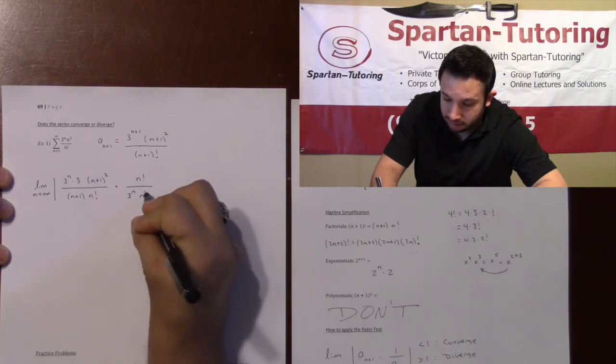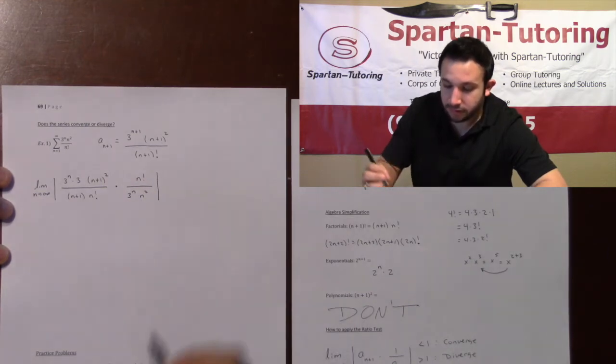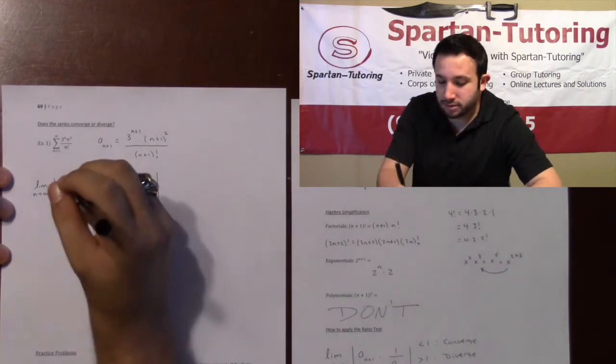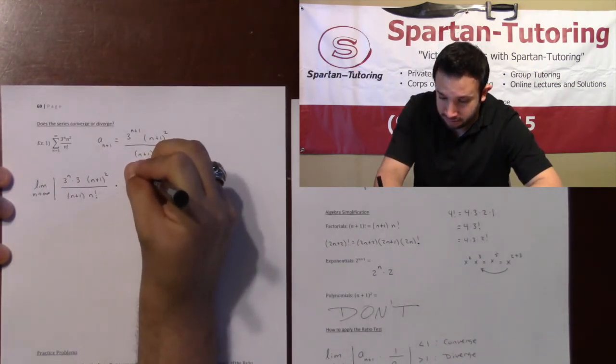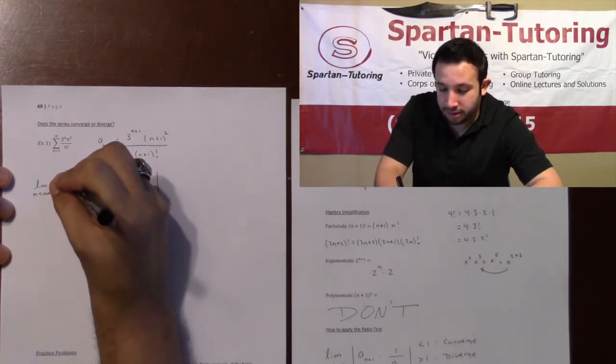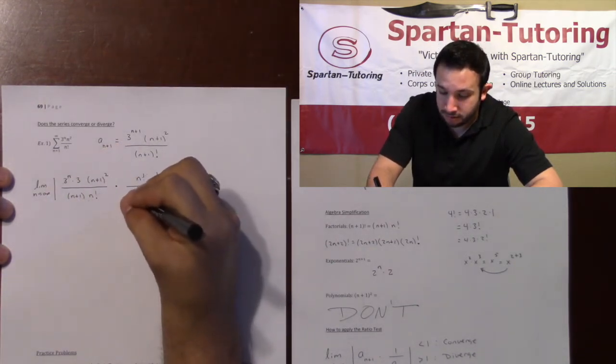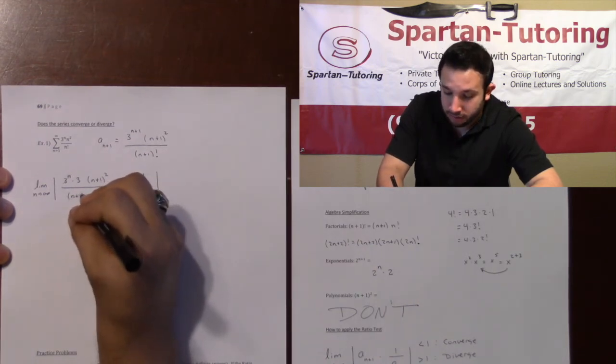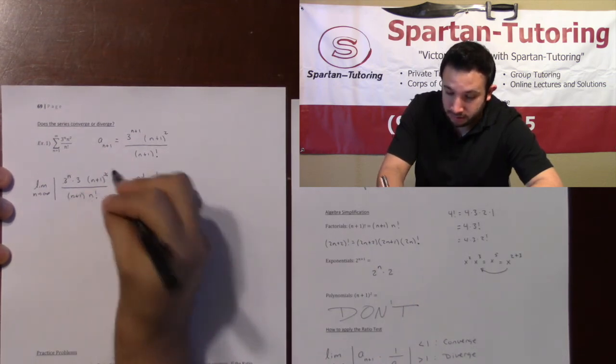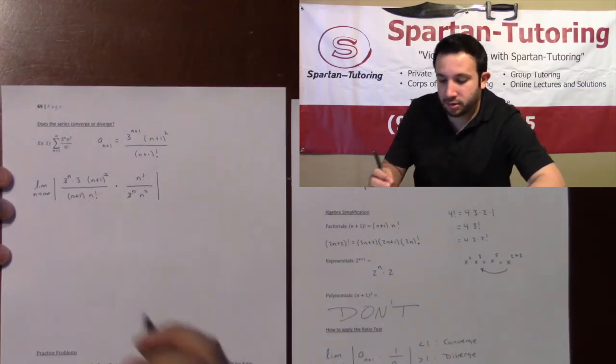And so this is going to be n factorial divided by 3 to the n times n squared. At this point, let's see what cancels. Notice how the n factorials are going to cancel. Look how these 3 to the n's are going to cancel. And heck, take a look: this n plus 1 will cancel with one of the n plus 1's there on top.